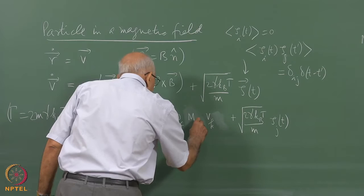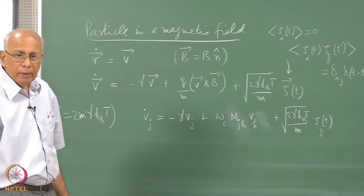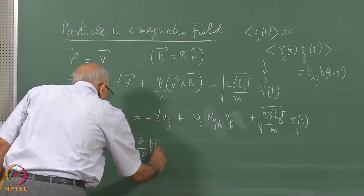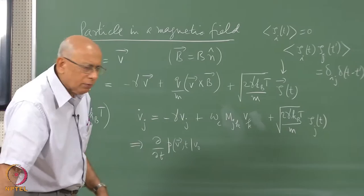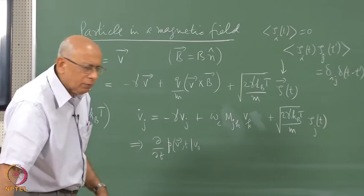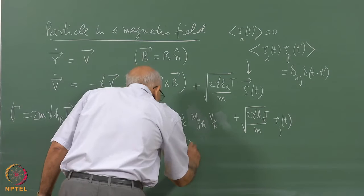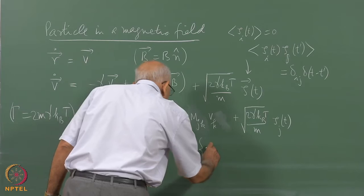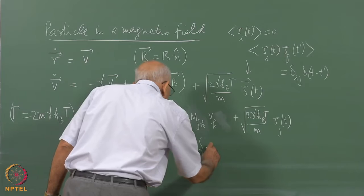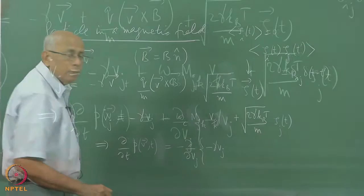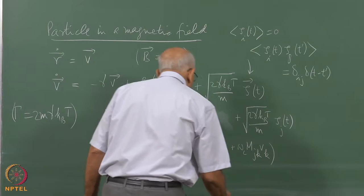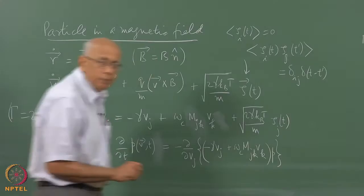The Fokker-Planck equation for the velocity distribution P(v,t) is: dP/dt = -d/dV_j [(-gamma·V_j + omega_c·M_jk·V_k)·P] plus the diffusion term D_jk · d²P/dV_j·dV_k. The drift F_j = -gamma·V_j + omega_c·M_jk·V_k. Now we need to identify the diffusion matrix D_jk from the noise properties.